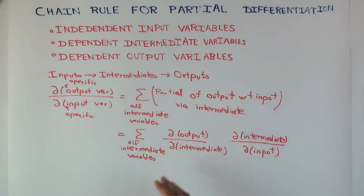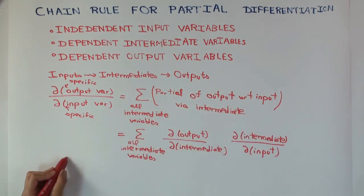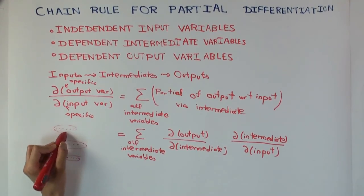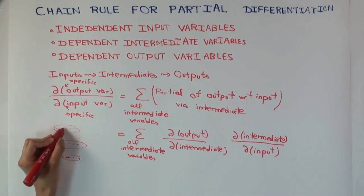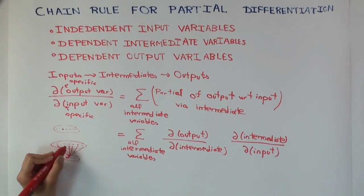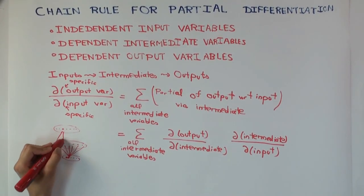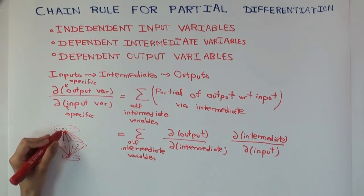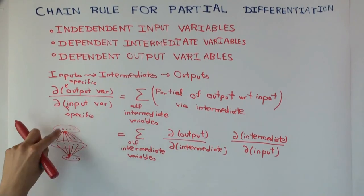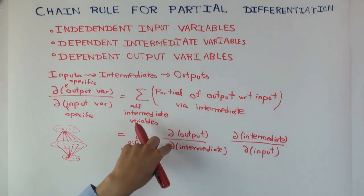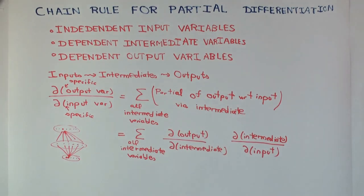It's a sum of these things. The way to think about it — sort of in a tree fashion — you have all these inputs, all these intermediates, and all these outputs. You fix an input and you fix an output, and you're concerned with how each of the intermediates depends on the fixed input, and how the output depends on each of the intermediates. For each such pathway, you compute the partial via that pathway, which, using chain rule thinking, is just the product of those two partials.